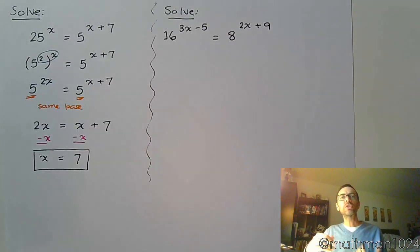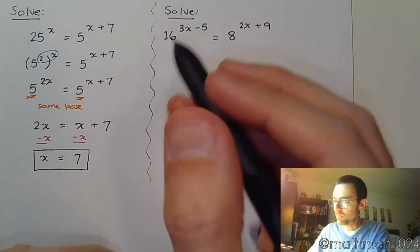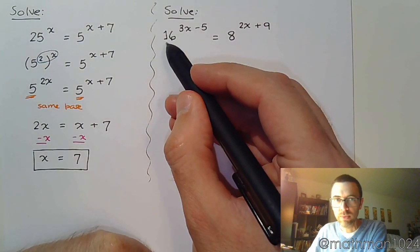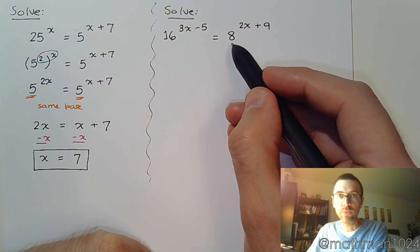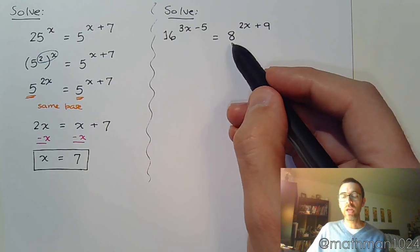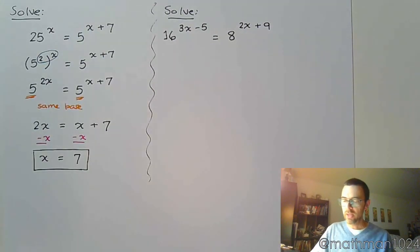So we need to go a little bit smaller than that. Think about what these guys are made up of. 16 is 2^4 and 8 is 2^3.